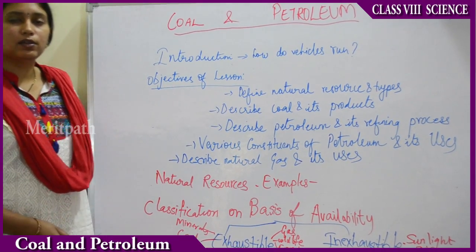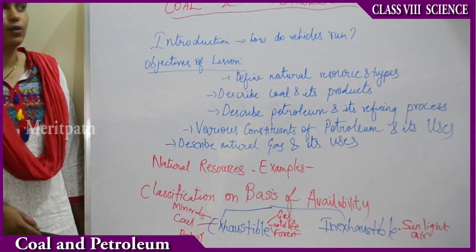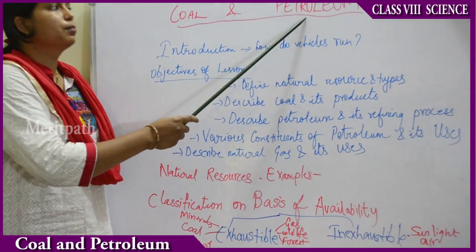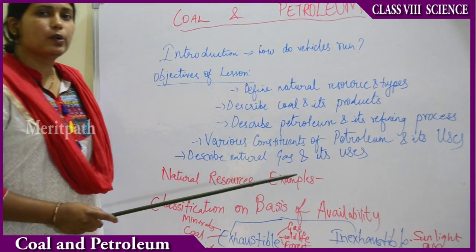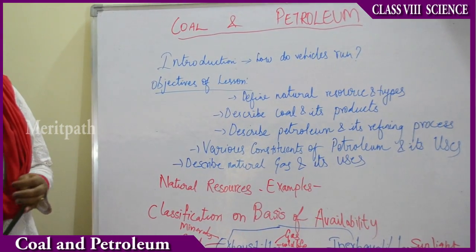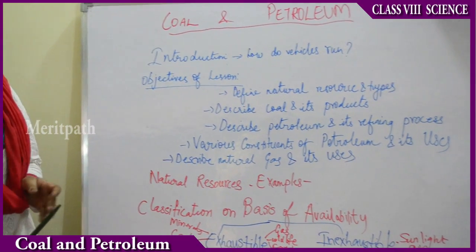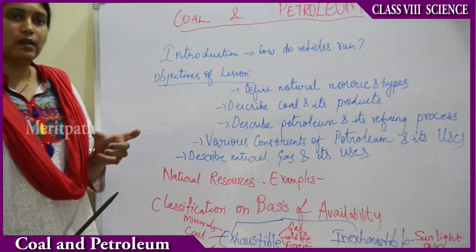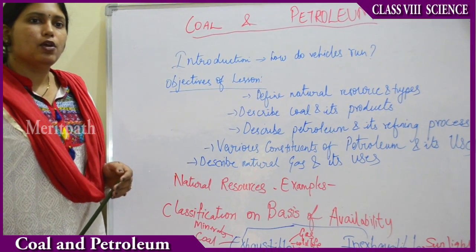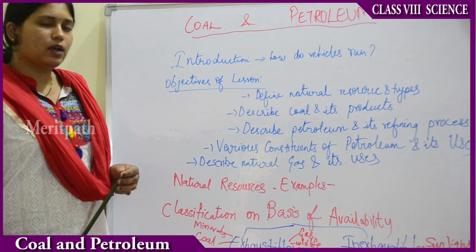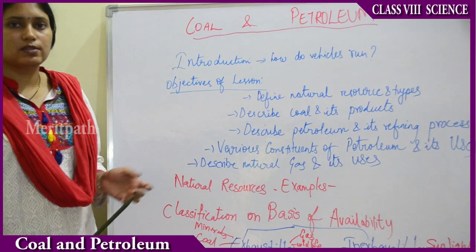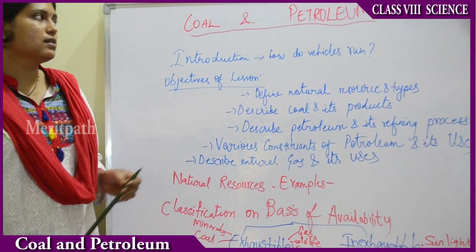Today we are going to learn about a chapter called Coal and Petroleum. What do you understand by coal and petroleum? You might have seen coal — it is a hard substance, black in colour, used in cooking of food, running of engines, train engines.